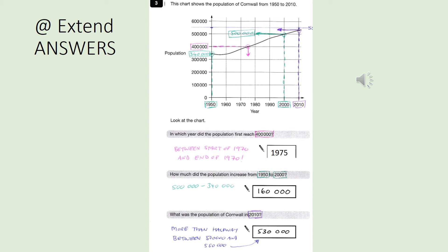For question two, how much did the population increase from 1950 to 2000? So you can see on the graph that in 1950, this person thinks that it was about 340,000. And you might have said slightly higher. You might have said 350,000, but as long as you're in the rough area, then I'm happy with that. And then in 2000, it increased to 500,000. So the difference between those is 160,000. Again, if you've put a slightly different number for 1950, your answer might be different, but hopefully you're not too far off.